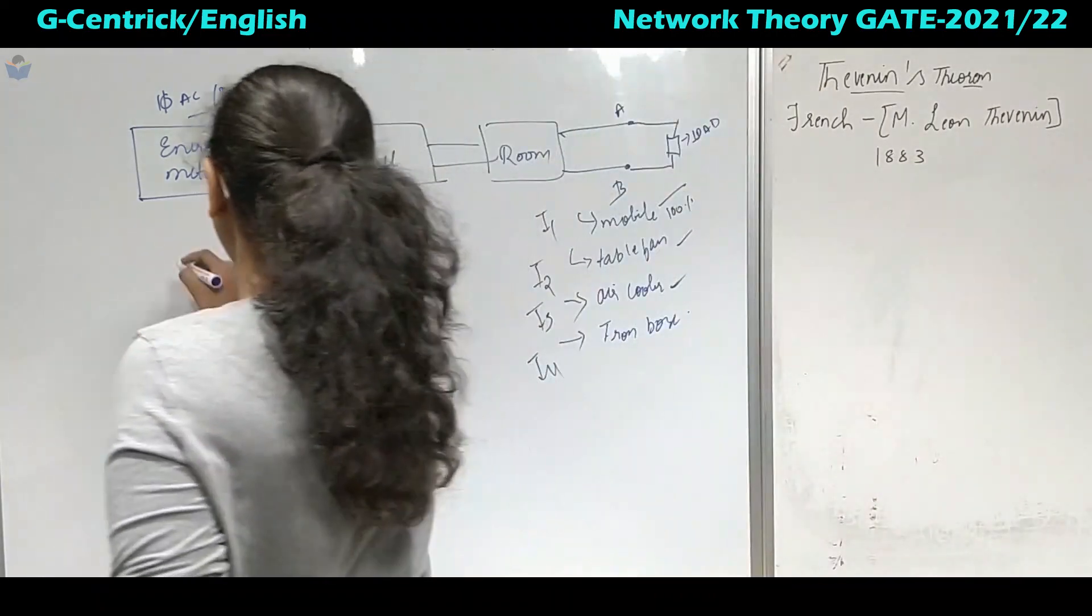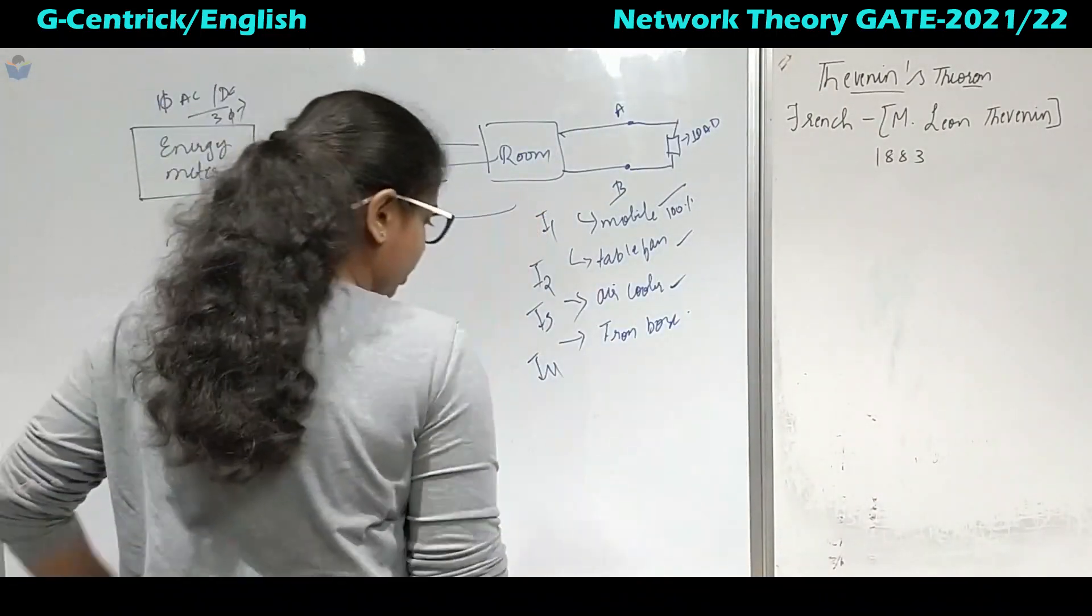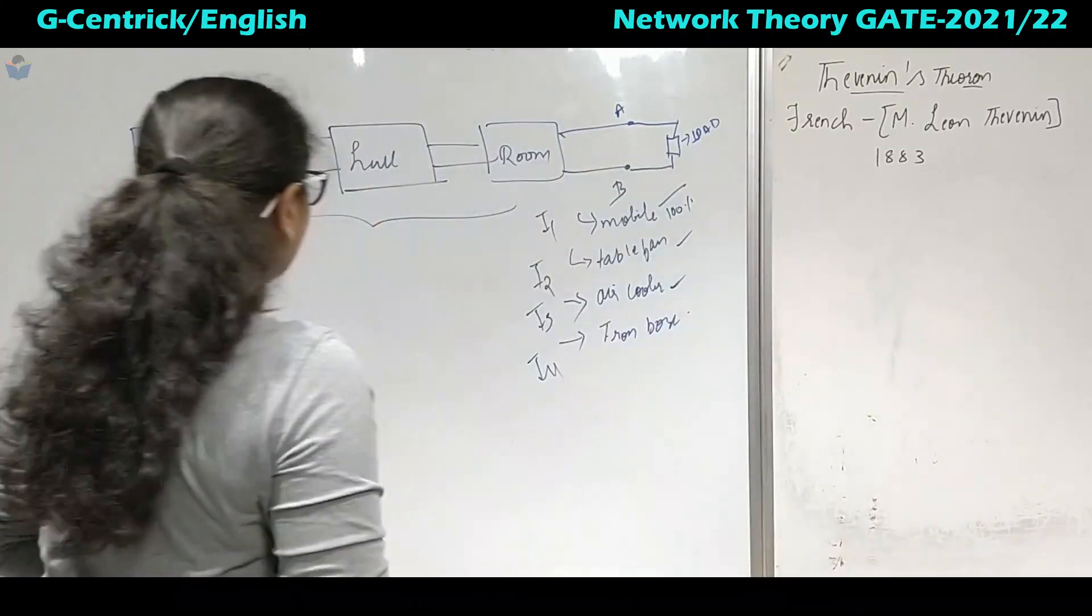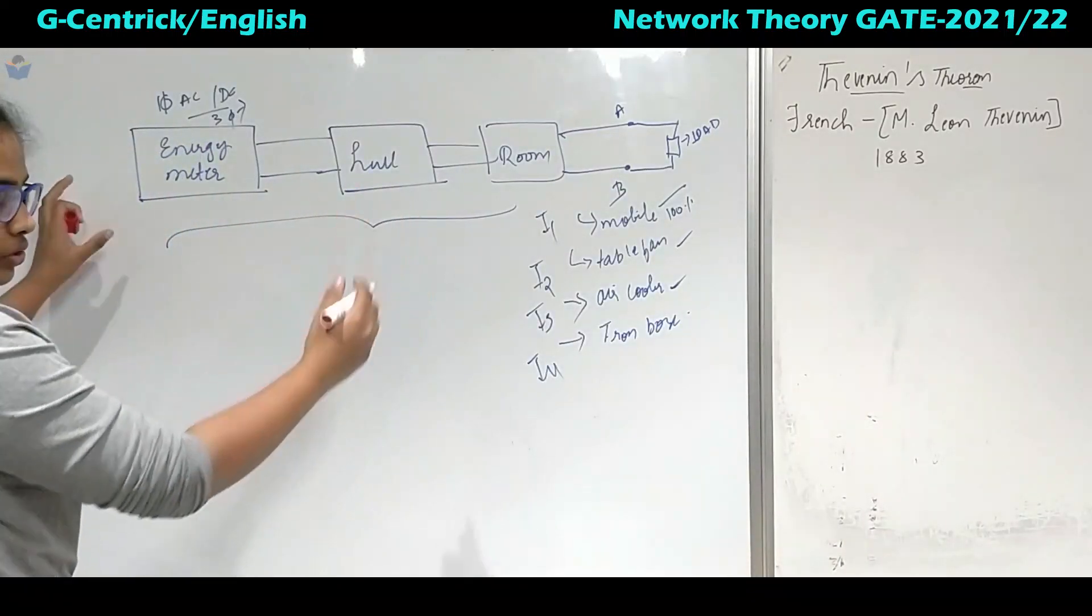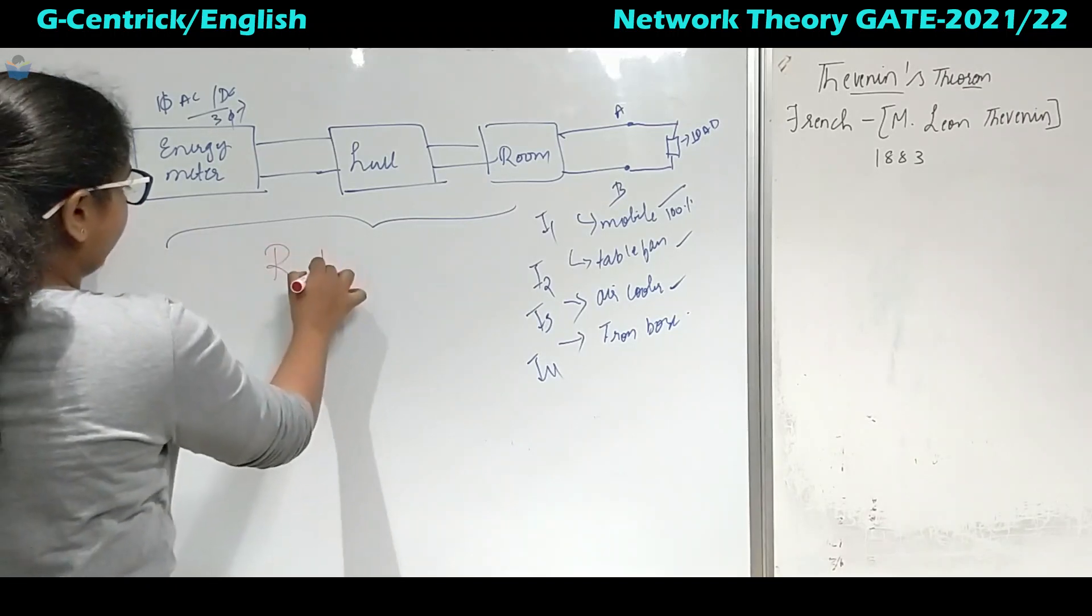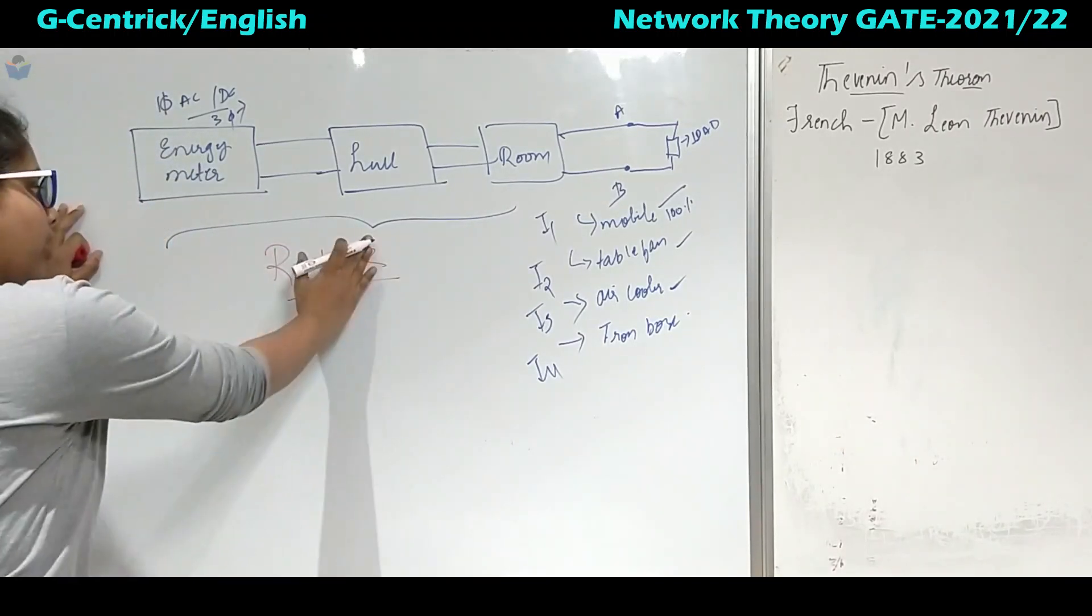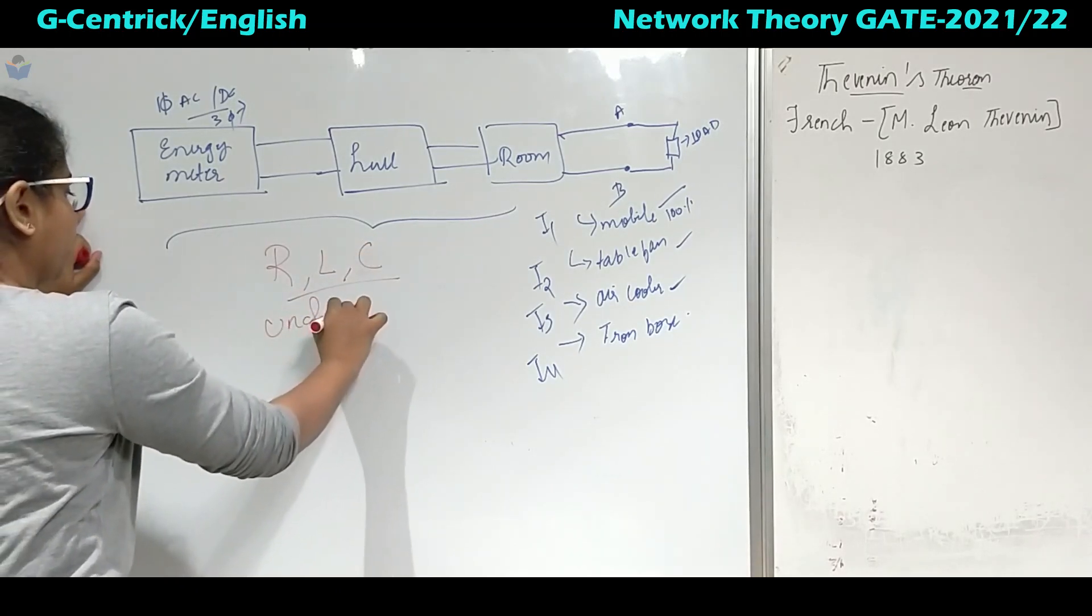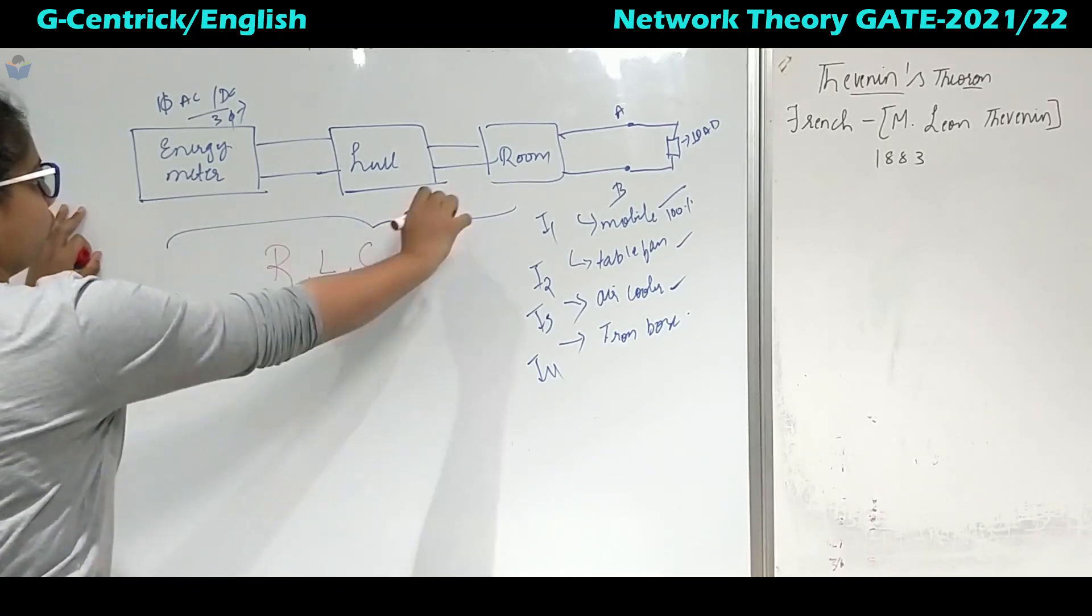Now up to here, from here to here you have got same thing, everything structure is same. R, L and C, all the three elements remain unchanged. They are unchanged. You are not varying anything over here.